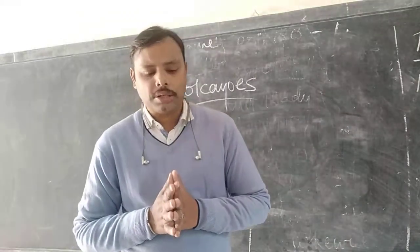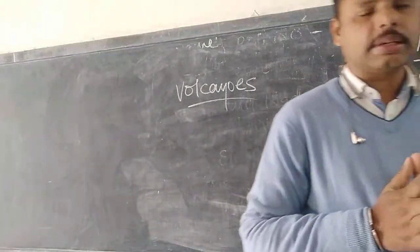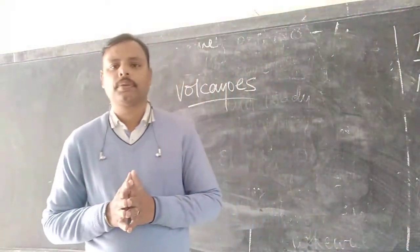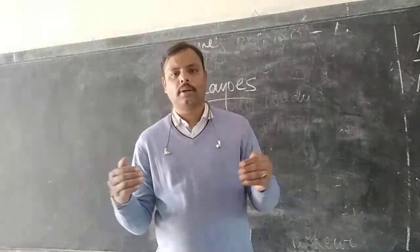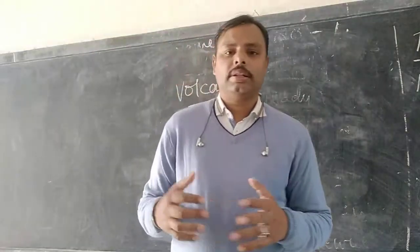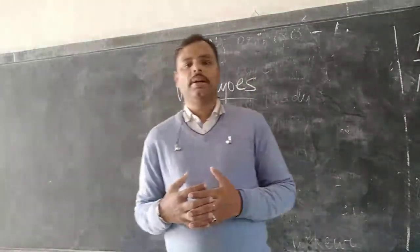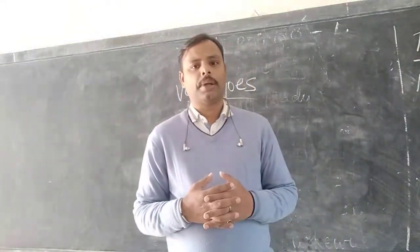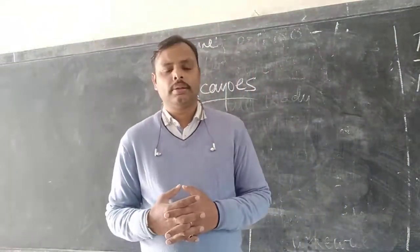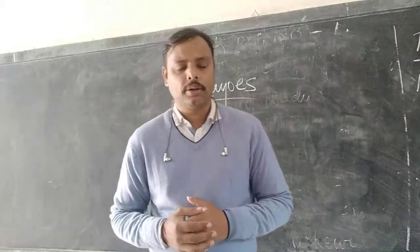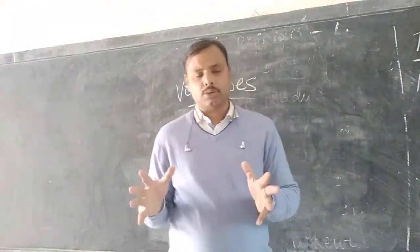Basically, a volcano is a vent on the earth's surface. A vent means a small open area or a small gap in the earth's surface through which molten rock, gases, and steam come out. They come out because there is a collision inside the earth — in the mantle part — where different molten rocks collide with each other. The collision effect is so high that they come out from wherever they get the space, through these vents.